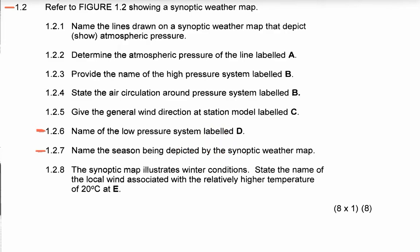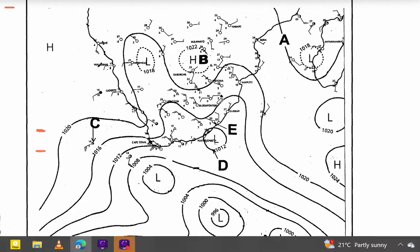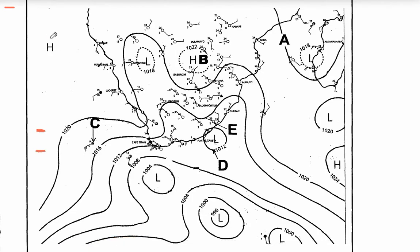Question 1.2.7: name the season being depicted by the synoptic weather map. It is winter. You can see the South Atlantic High Pressure cell is dominant over the Atlantic Ocean, and the Kalahari High is dominant in the interior of South Africa. These are characteristic of winter conditions. The season depicted is winter.